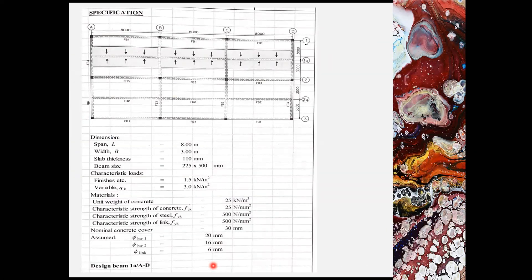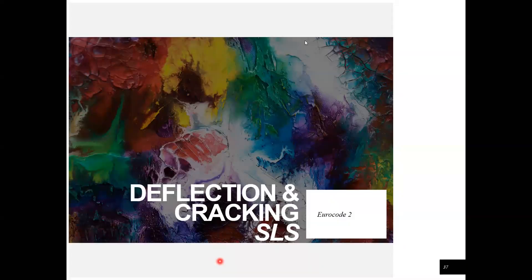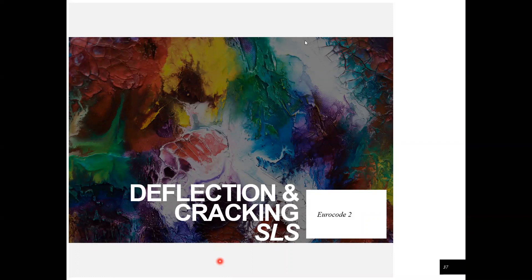Here a design for reinforced concrete beam in grid 1A, A to D is shown. Design inputs such as section, parameter, material parameters and actions are shown. This video only shows the practical solution to deflection and cracking checks according to Eurocode 2, which is also the serviceability limit state design.